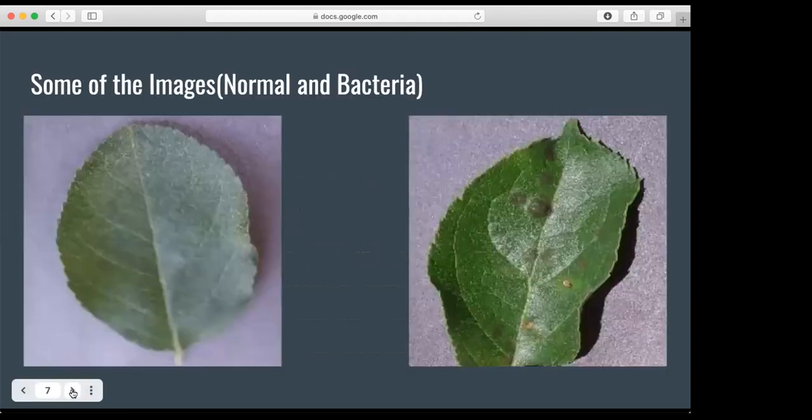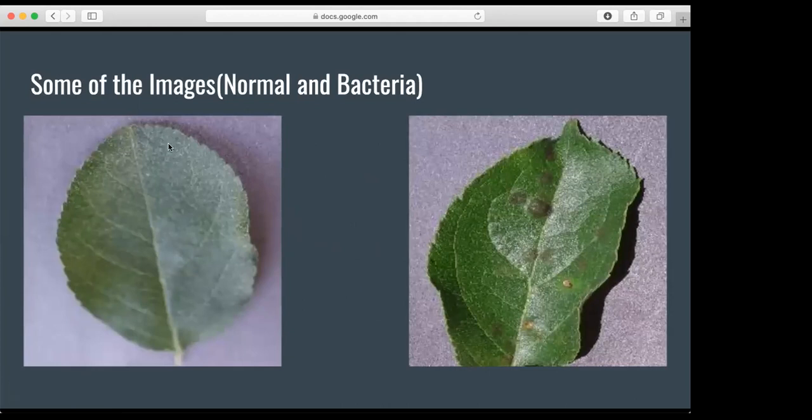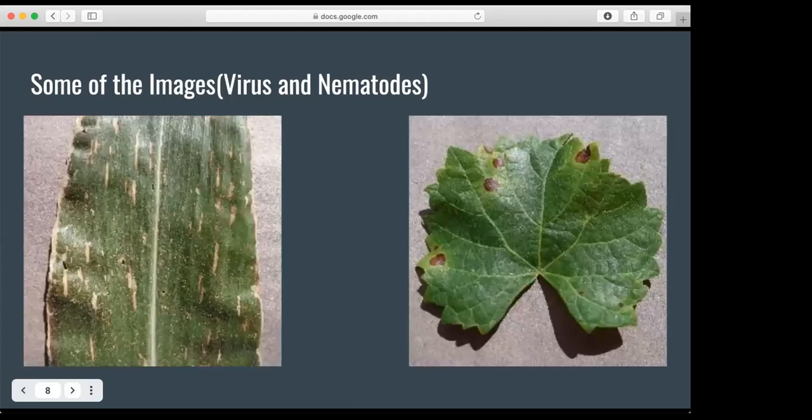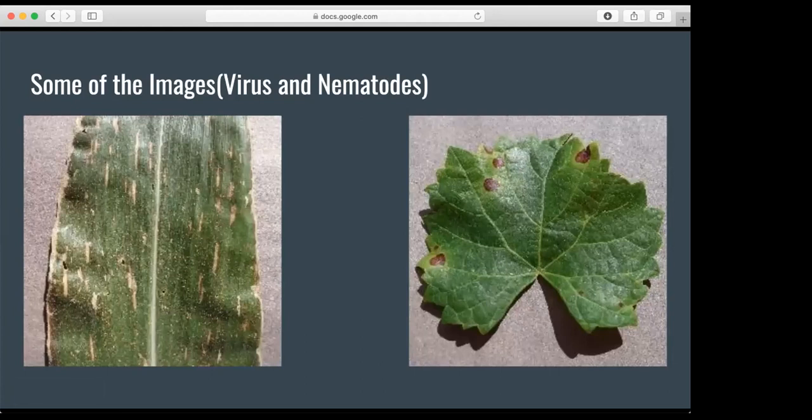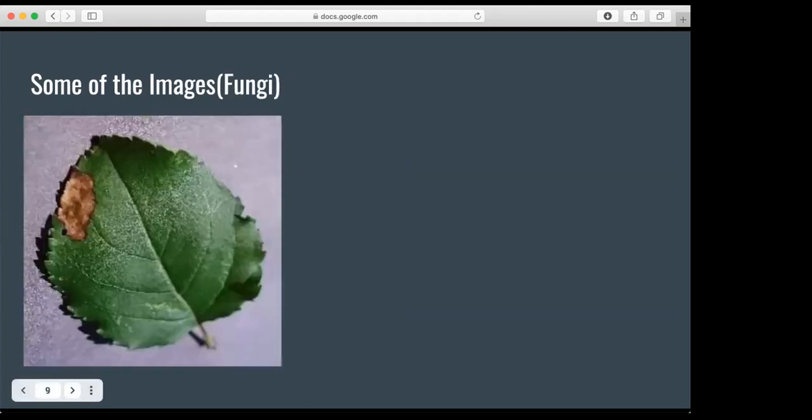So here's some of the images. On the left-hand side you have the normal image and on the right-hand side you have a leaf that has been infected with bacteria. On the left-hand side you have a leaf that has been infected with a virus. And on the right-hand side you have a leaf that is infected with nematodes. And here you have a leaf that has been infected with fungi.